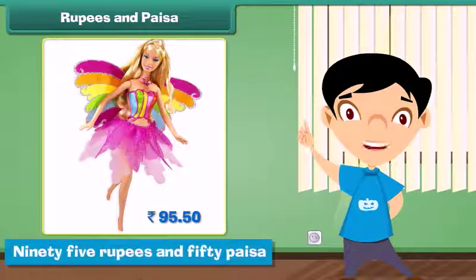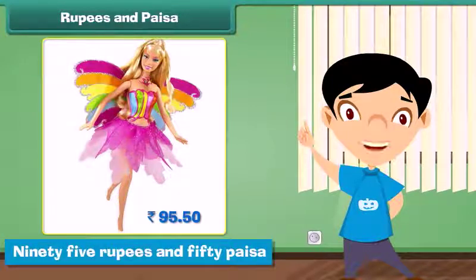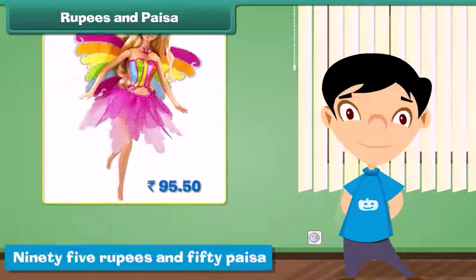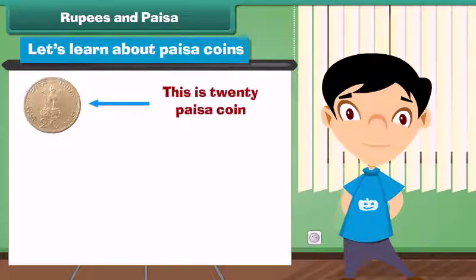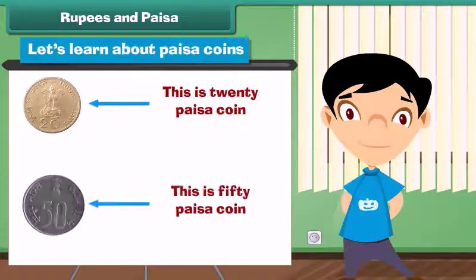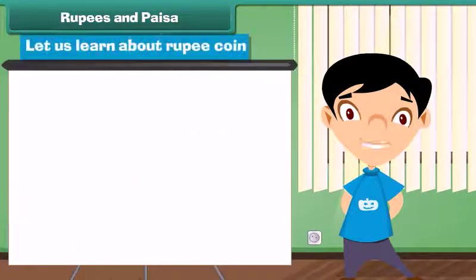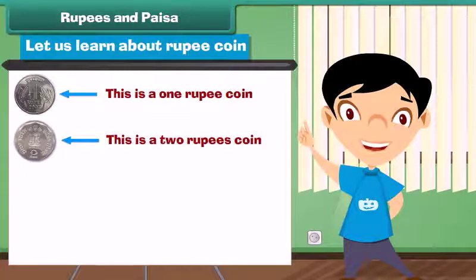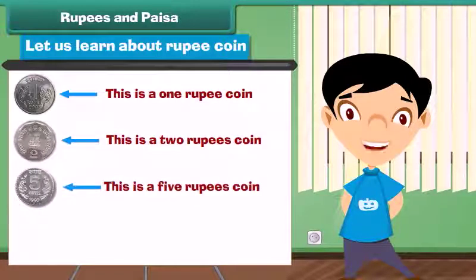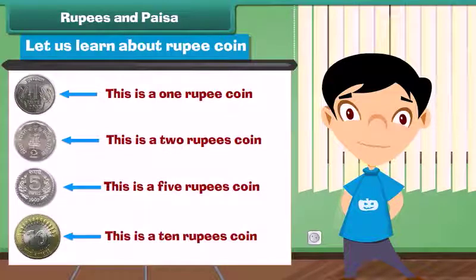7 rupees 50 paise is written as Rupees 7.50. Look at this Barbie doll — the price is written on its label. We read the price as 95 rupees and 50 paise. Let's learn about paise coins. This is a 20 paise coin. This is a 50 paise coin. Let us learn about rupee coins. This is a 1 rupee coin. This is a 2 rupees coin. This is a 5 rupees coin.